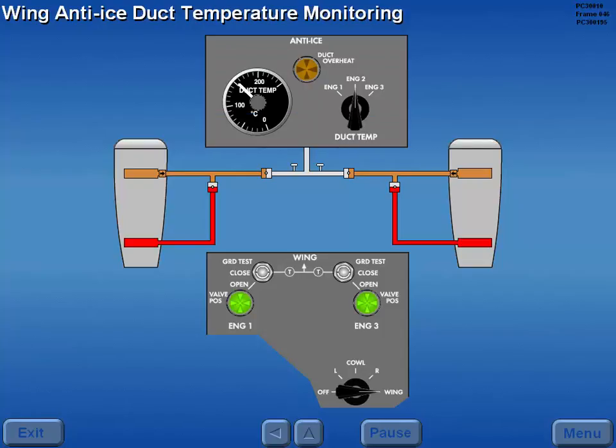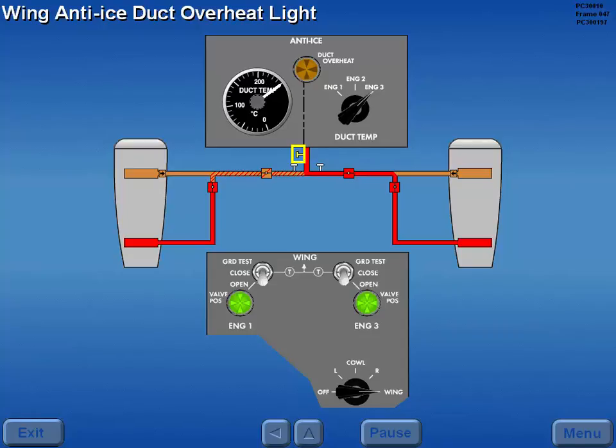Wing anti-ice duct temperature is monitored using the anti-ice duct temperature selector and indicator. The location of the temperature sensors are shown schematically on the control panel. In flight, if excessive temperature is sensed in the wing anti-ice supply duct, a separate sensor illuminates the anti-ice duct overheat light independent of selector position. This light is advisory only and has no effect on the valves.